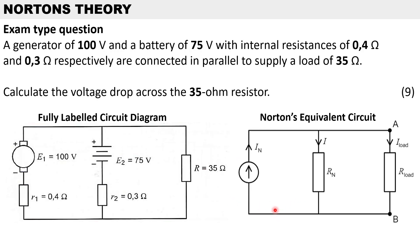Let's take a look at an exam type question using Norton's theorem. A generator of 100 volts and a battery of 75 volts with internal resistances of 0.4 ohms and 0.3 ohms respectively are connected in parallel to supply a load of 35 ohms.